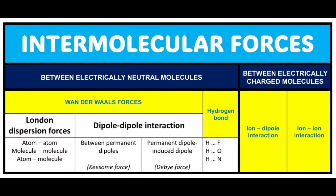Now let's have a look at the table and see which types of intermolecular forces exist. There are overall four types of intermolecular forces: van der Waals forces and hydrogen bond — these two are for molecules which are electrically neutral — and ion-dipole interaction and ion-ion interaction, which are characteristic for molecules which are electrically charged.